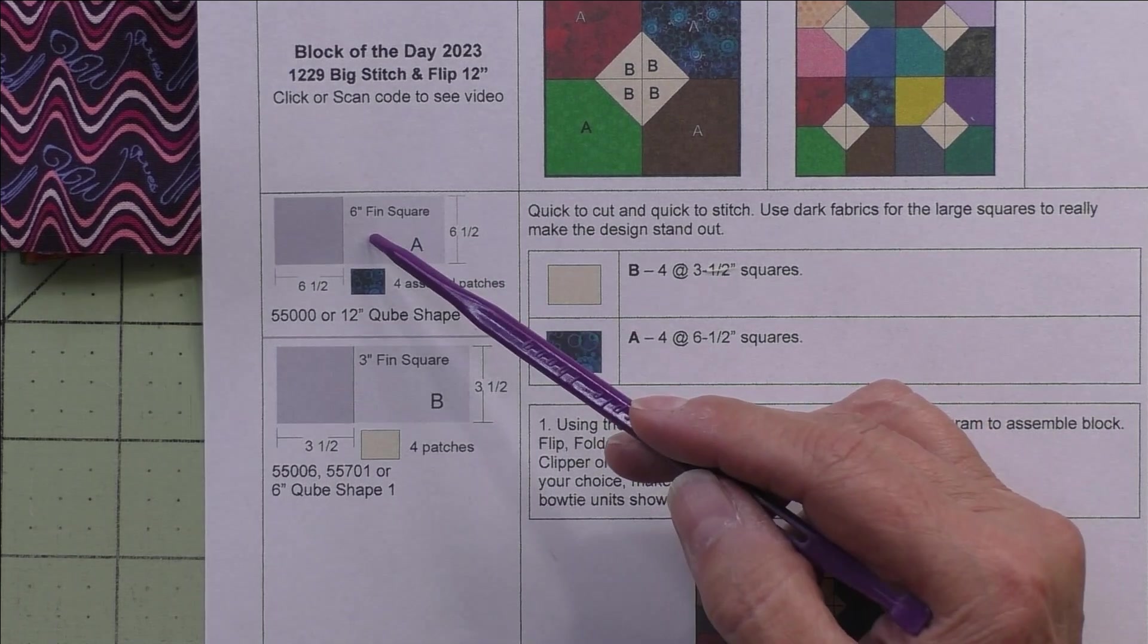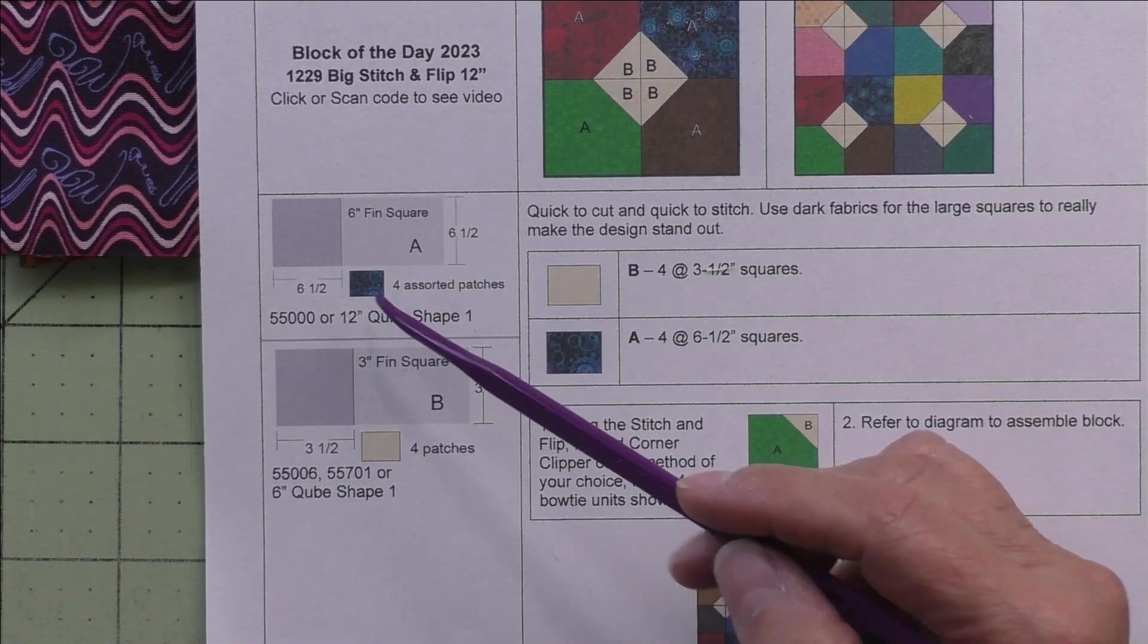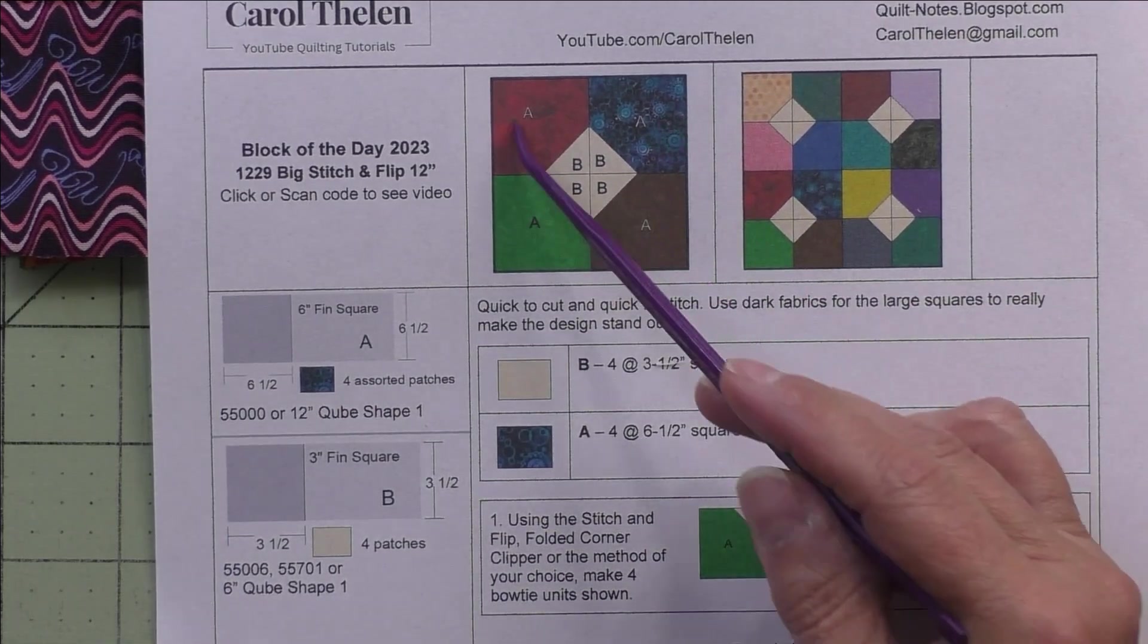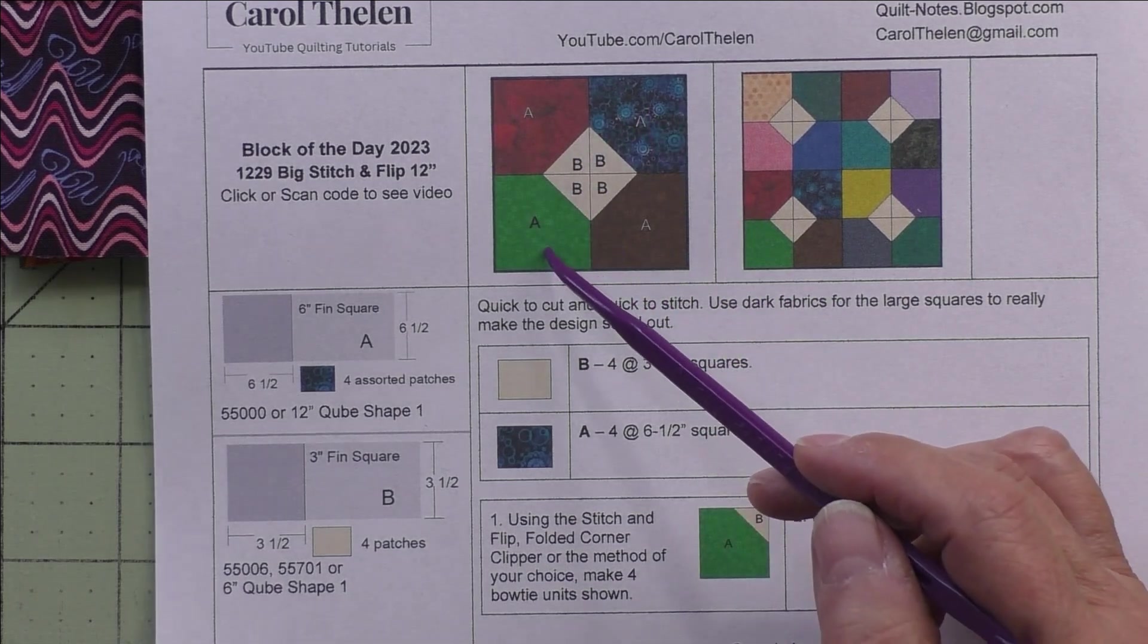We have two patches. Patch A is a six inch finished square - we cut six and a half inch squares. We'll need four assorted patches; these are the big outer squares. If you have more darker fabrics, medium to dark fabrics here, then the design will really stand out, but really anything goes.